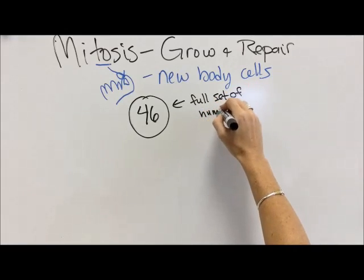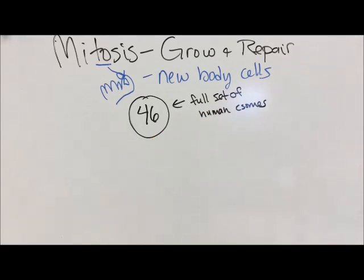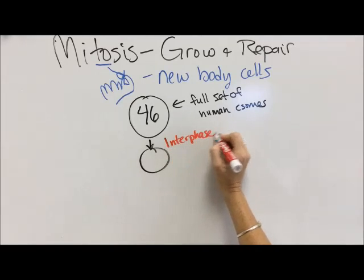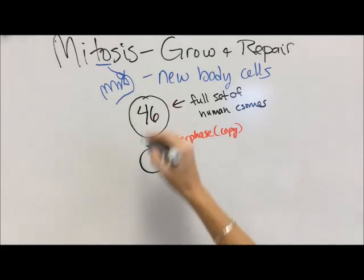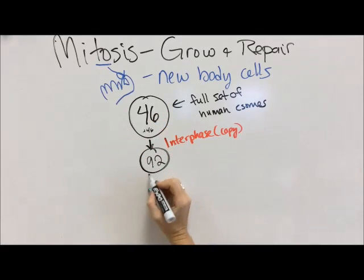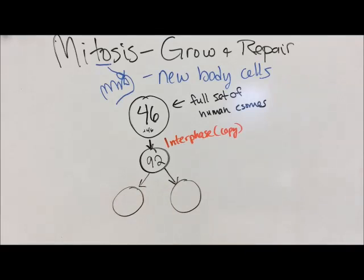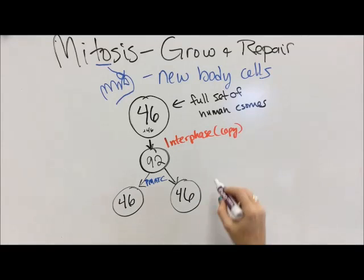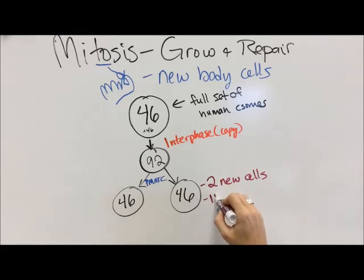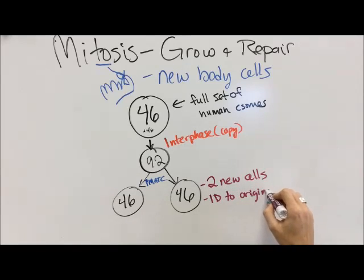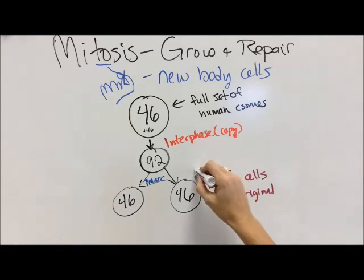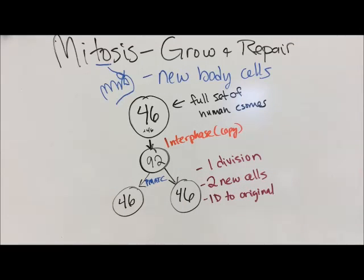A human cell has 46 chromosomes — a full set, also called 23 pairs. We're going to call it 46 today. During interphase, we have the copy phase, so 46 becomes 92. Just for a little bit your body has 92 chromosomes, because then it does that PMAT-C and the cells get 46. So one cell of 46 copies and divides. We get two new cells with a full set of 46 chromosomes, identical to the original cell — one division, two new cells, and the new cells are identical to the original cell.